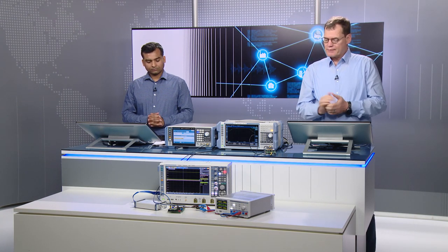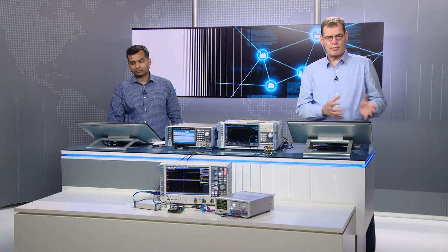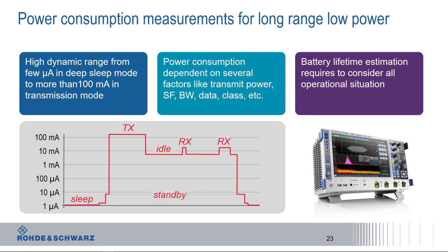That's a very powerful tool — playing with impairments and all the different parameters to test receiver performance. Now let's address power consumption, which is a very important topic for low power wide area networks. It's increasingly complex to estimate and measure, so let's look at some motivating slides before the demo.